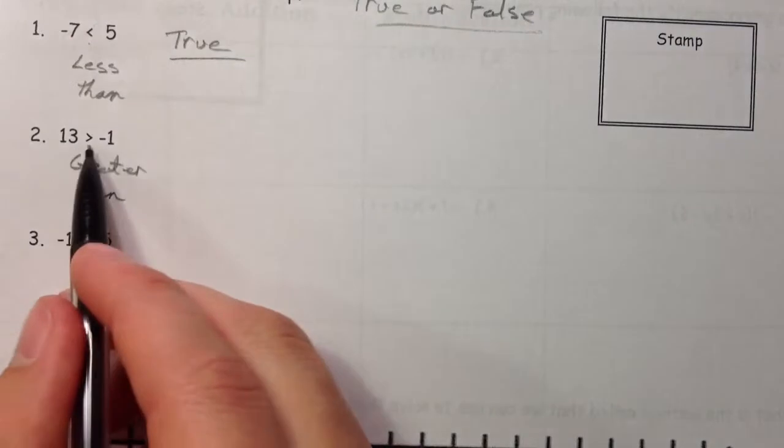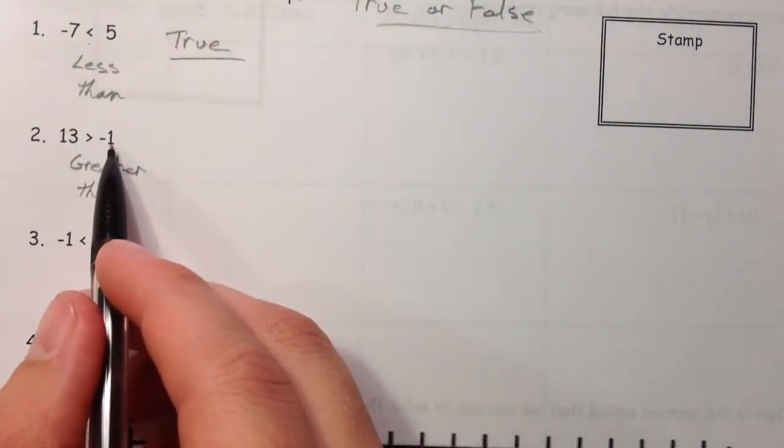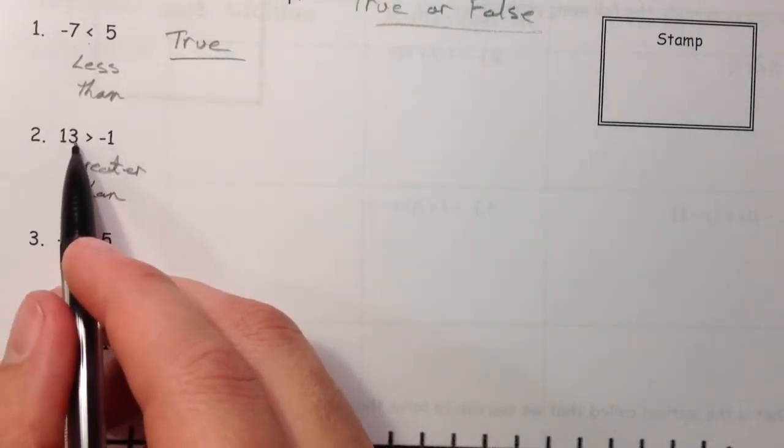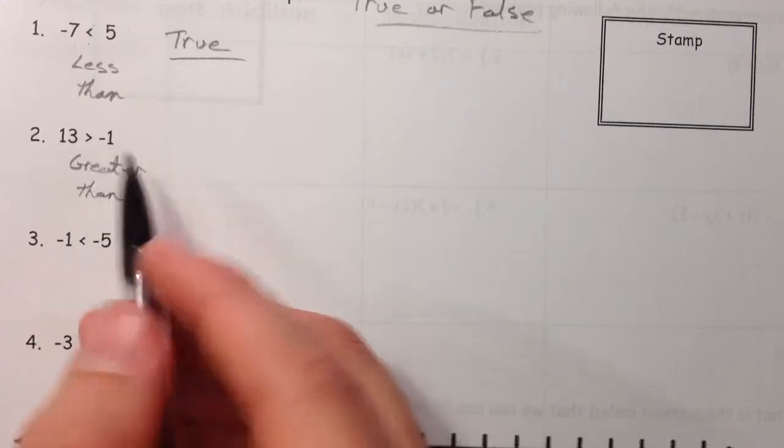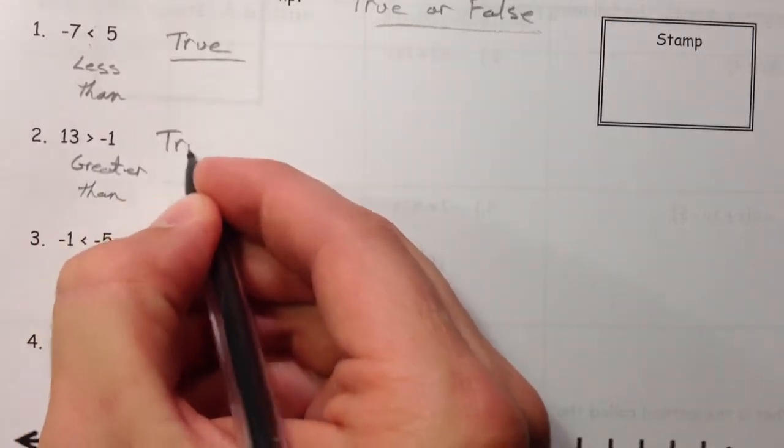Now, is 13 greater than negative 1? Well, 13 is positive, and so it's definitely going to be bigger than the negative number. That is true.